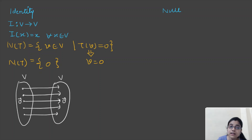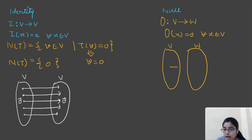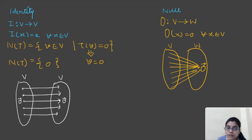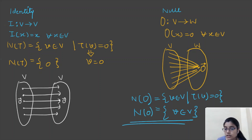For the null (zero) linear transformation from V to W such that 0(x) = 0 for all x in V, every element of vector space V is mapped to the zero vector of W. By the definition of the null space, all vectors v in V satisfy t(v) = 0, so the entire vector space V forms the null space of the zero linear transformation.